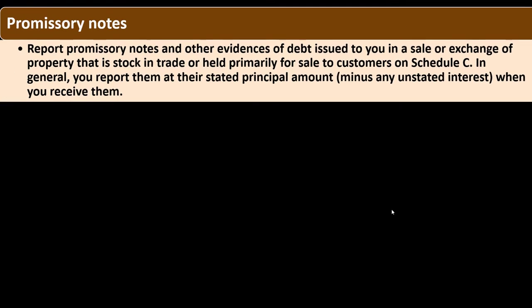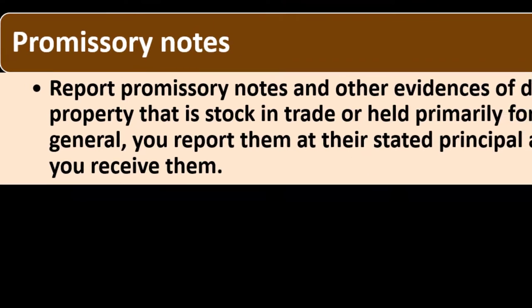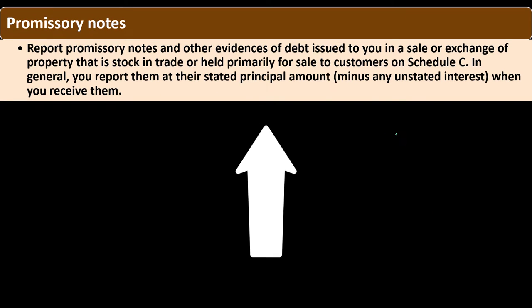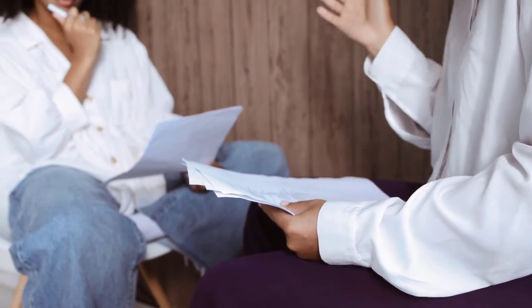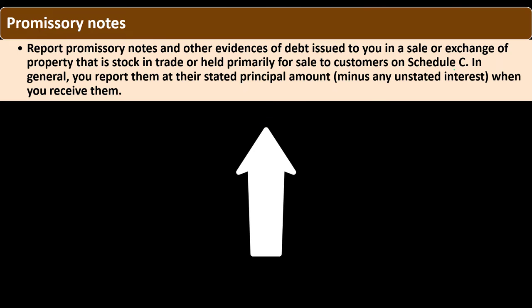Report promissory notes and other evidence of debt issued to you in a sale or exchange of property that is stock in trade or held primarily for sale to customers — basically inventory. If you sold inventory for a promissory note rather than cash, that would generally be income at the point in time the sale was made under the accrual method. In general, you report them at their stated principal amount minus any unstated interest when you receive them.